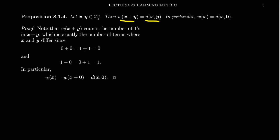And the argument for this is actually fairly simple. Let's note that the weight of X plus Y just counts the number of ones that are in X plus Y. But how do you get a one in X plus Y? If X and Y both had a zero in a specific bit, then the sum would be zero.